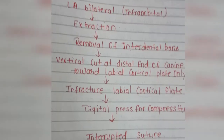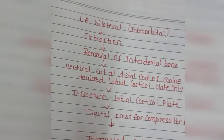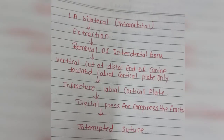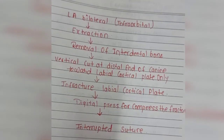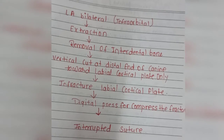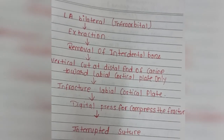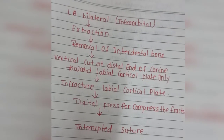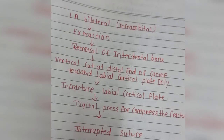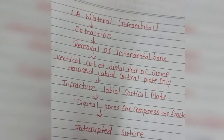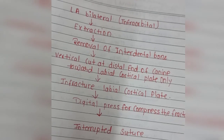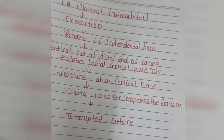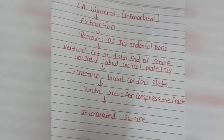Let's revise Dean's Alveolar Plasty once more. First, give local anesthesia bilaterally. Then do the extraction. After extraction, remove the interdental bone. After interdental bone removal, give a vertical cut from canine to canine toward the labial cortex plate only. Then do the infracture of the labial cortical plate. Then do digital press for compression of the fracture. Finally, give the interrupted suture. Thank you for watching the video.